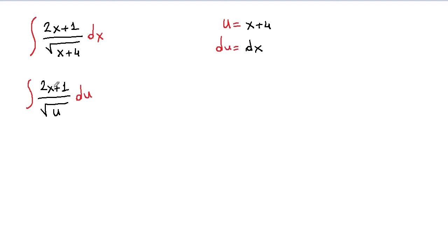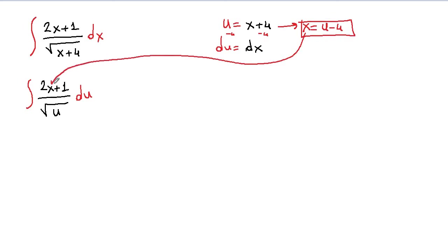Here we have an x term that we need to write in terms of u. So we need to solve for x in terms of u. If u is equal to x plus 4, then x will be equal to u minus 4 — if you subtract 4 on both sides, you get x as u minus 4. Now instead of x, we're going to write u minus 4 and rewrite the whole integral. So we have 2 times (u minus 4) in the numerator, divided by square root of u, du.